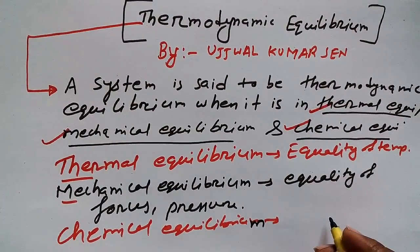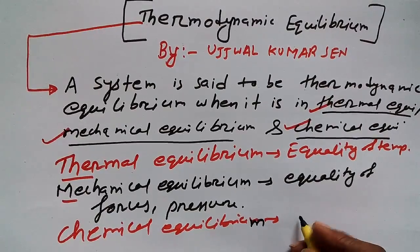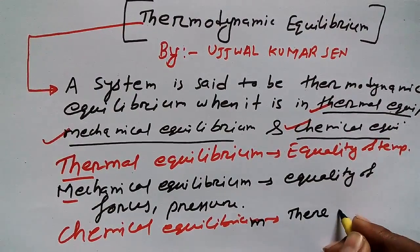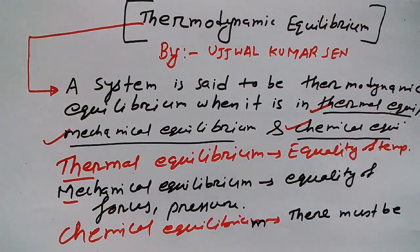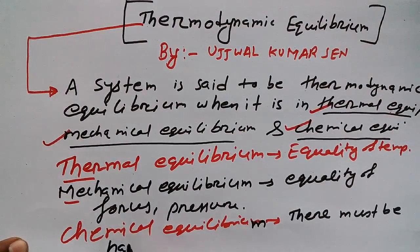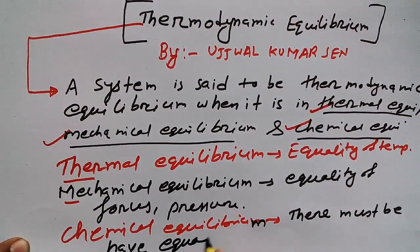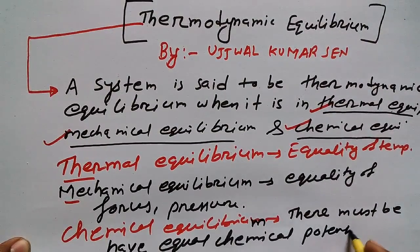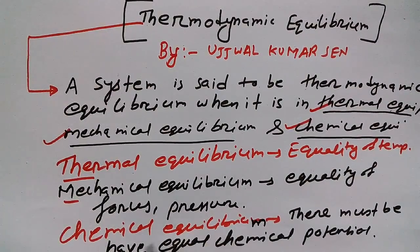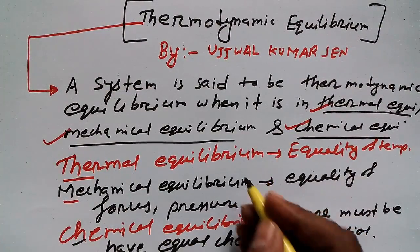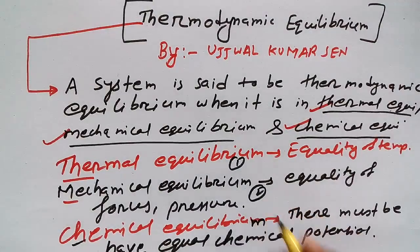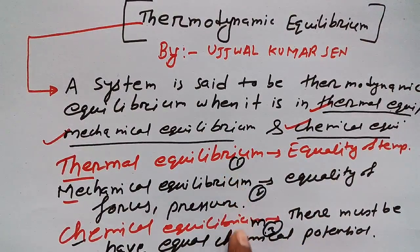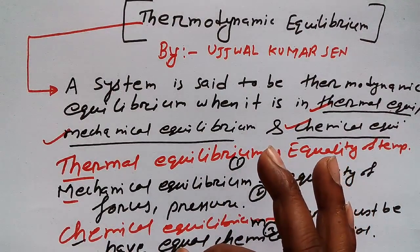And what is chemical equilibrium? In case of chemical equilibrium, there must be equal chemical potential. So if in any system all these three things — thermal, mechanical, and chemical — are satisfied, then we say that system is in thermodynamic equilibrium.